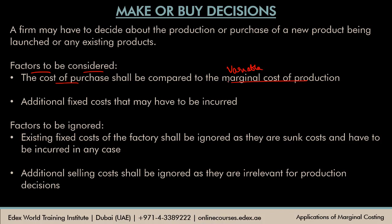Keep in mind, we are not taking into account the existing fixed cost of the business. We are only comparing the cost of purchase — the price from the external supplier — to the variable cost of production. Any additional fixed cost that may have to be incurred is important, because that is extra money going out of the firm's pocket. But existing fixed costs should be ignored — they are sunk costs. Any additional selling costs also have to be ignored, because selling costs have to be paid whether you make or buy the product; they are irrelevant for decision making.